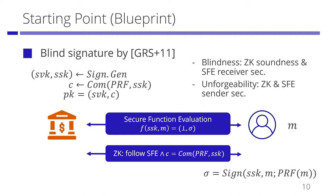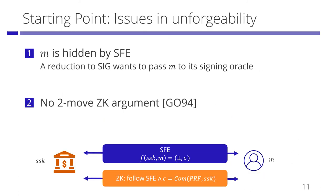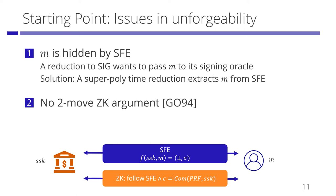However, proving unforgeability is a bit tricky. We want to prove unforgeability of the blind signature using unforgeability of standard signatures, but a reduction cannot pass a message to its signing oracle because the user's message is hidden by secure function evaluation. Garg et al. resolved this issue by using complexity leveraging — assuming signatures with superpolynomial time security and using a superpolynomial time reduction — so the reduction can extract the message by breaking the receiver security of secure function evaluation.